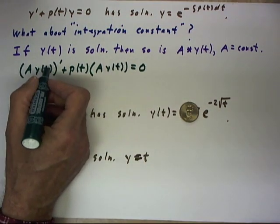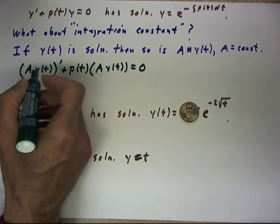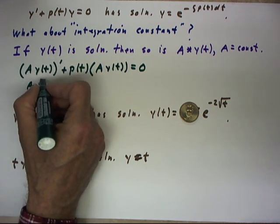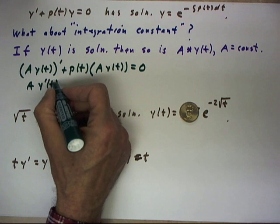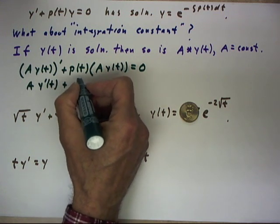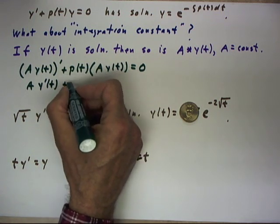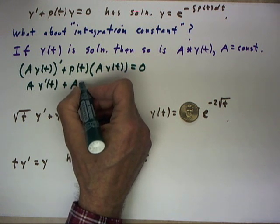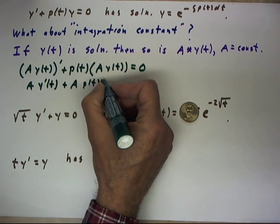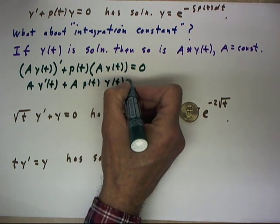Well, if we take the derivative of Ay(t), we get Ay'(t), and if we rearrange this, we can get it into the form A times y'(t) + p(t)y(t) = 0.